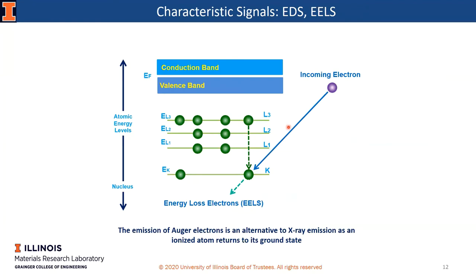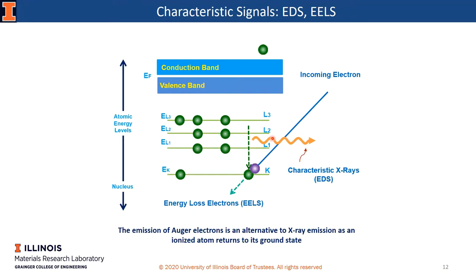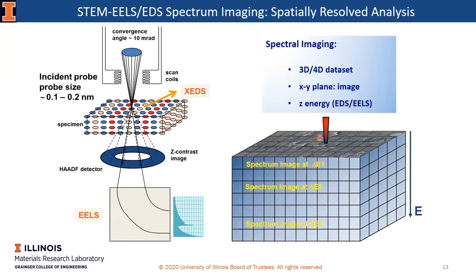Let's briefly review the electron transition caused by an incident electron. We have an incoming electron impinging an atom. Where the incident electron has enough energy, it can knock out an inner shell electron — the atom is ionized. The ionized atom is not stable, and an outer shell electron will jump into the hole left by the ejected electron. The energy difference is released as an X-ray photon. At the same time, the incident electron loses energy and becomes an energy-loss electron. Both the X-ray photon and the energy-loss electron carry information about the atom, so we can use them for chemical analysis via XEDS and EELS spectroscopy.